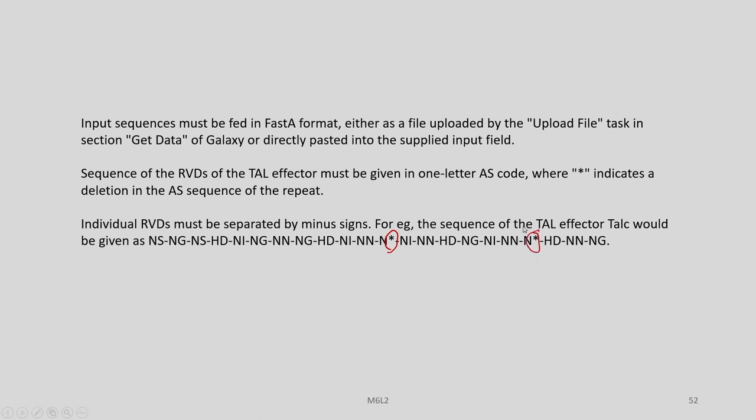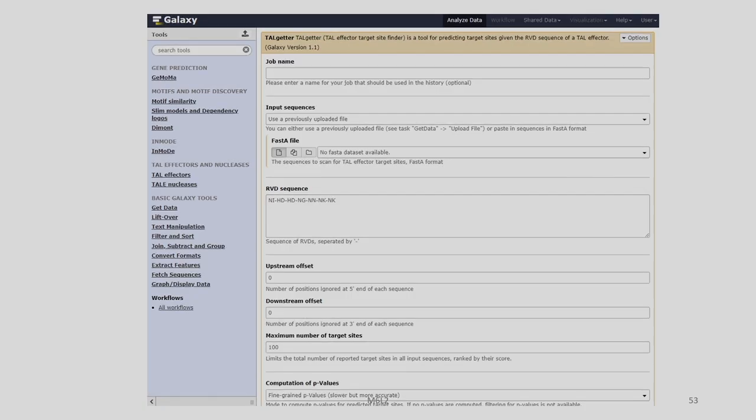TALgetter is available as a public web server. A web application can also be installed on a local server, Galaxy server, or as a command-line program. Input sequences must be in FASTA format, either uploaded as a file, obtained via Galaxy's 'Get Data' section, or directly pasted into the input field. The RVD sequence of the TAL effector must be given in one-letter amino acid codes, where an asterisk indicates a deletion in the amino acid sequence of the repeat, and individual RVDs must be separated by minus signs. For example, the sequence of TAL effector TAL-C would be given as N*s-Ng-N*s and so on.